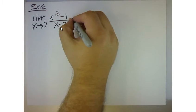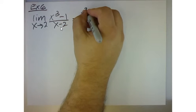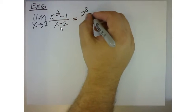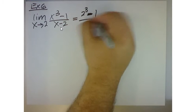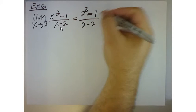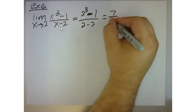If I were to plug that in, 2 cubed minus 1 all over 2 minus 2 is going to give me 8 minus 1, which is 7 over 0.